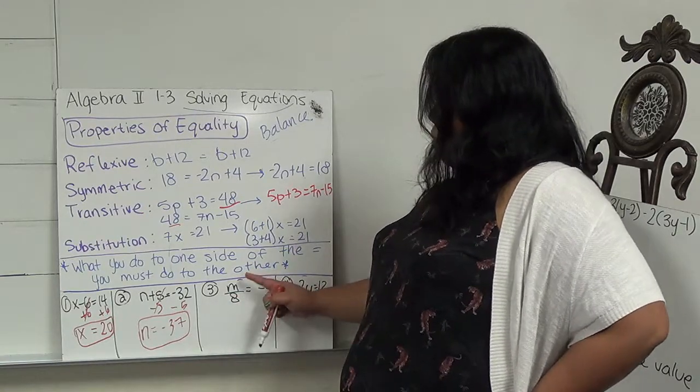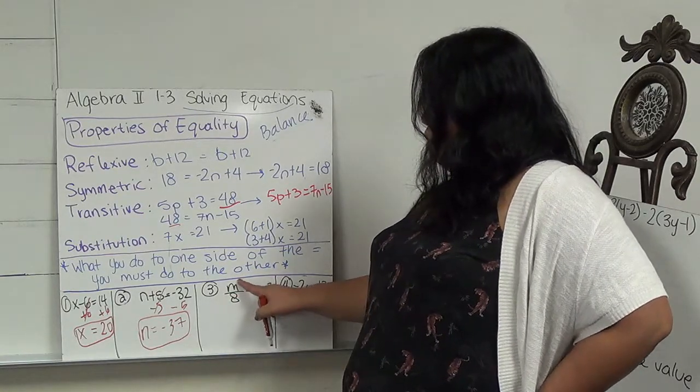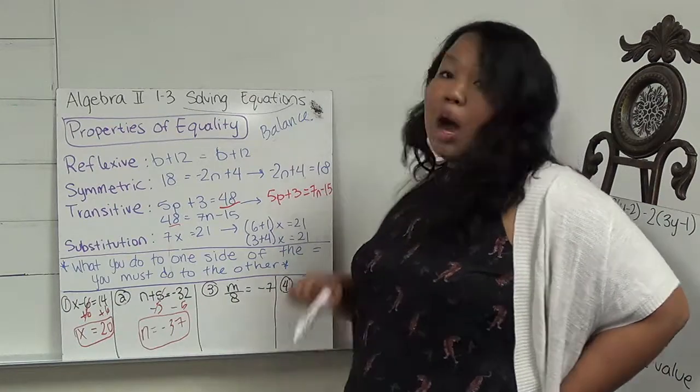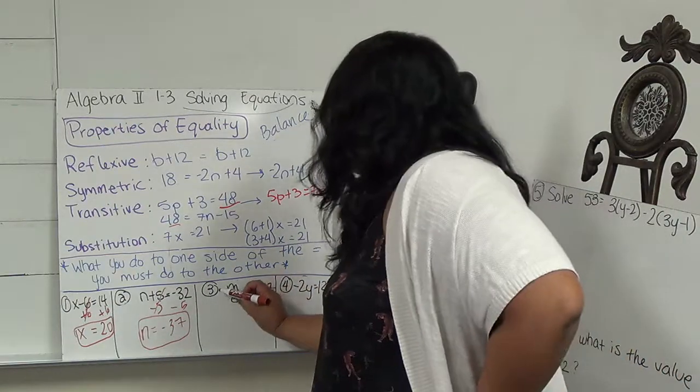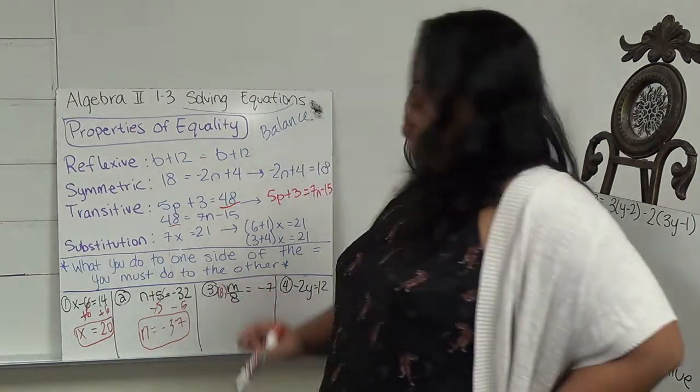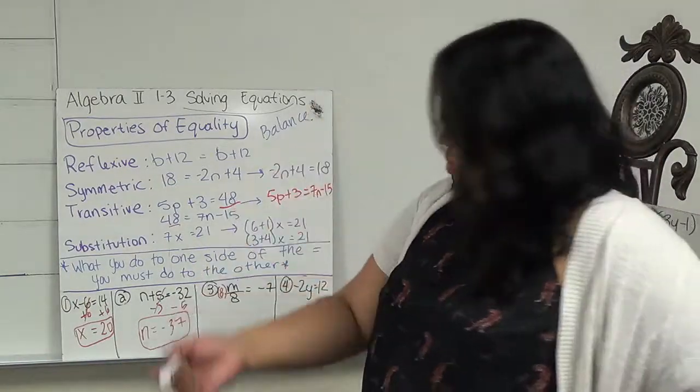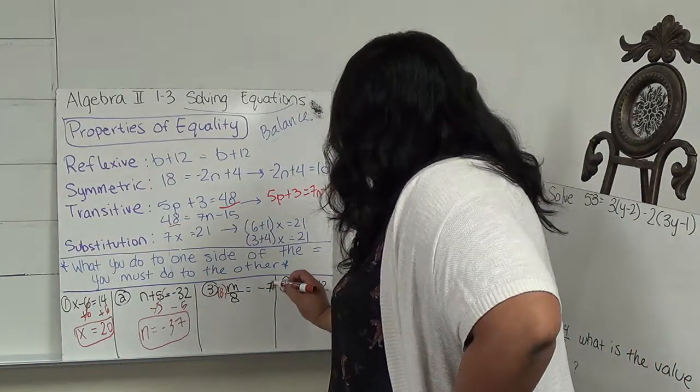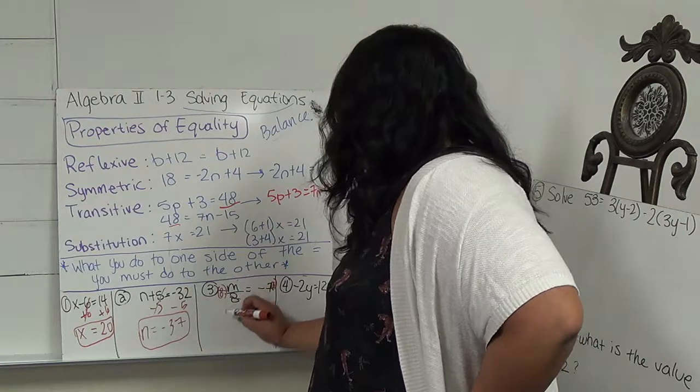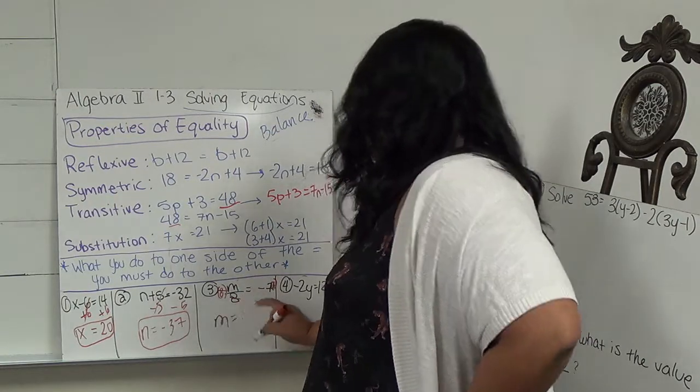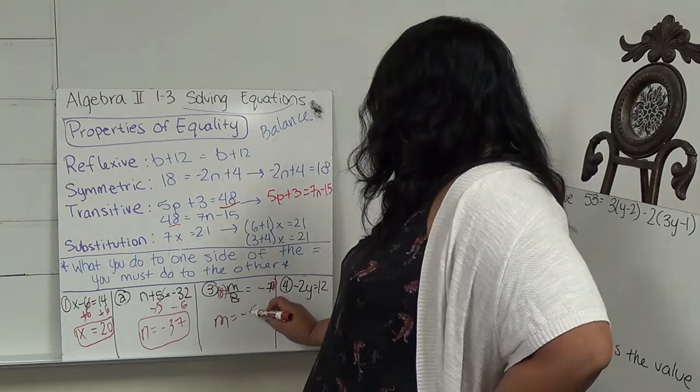Number 3 is m over 8. Our variable is being divided by 8. So the opposite of division is multiplication. And what I do to one side, I have to do to the other. So this cancels out. And I have m equals negative 7 times 8, which is negative 56.